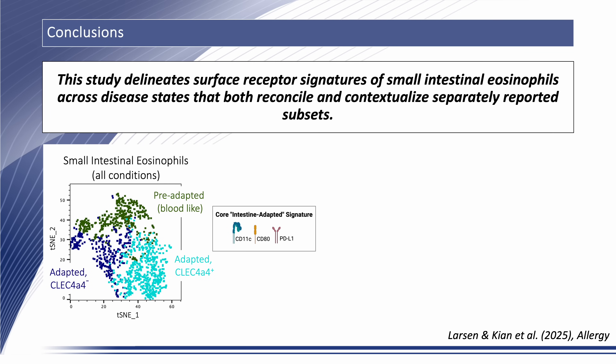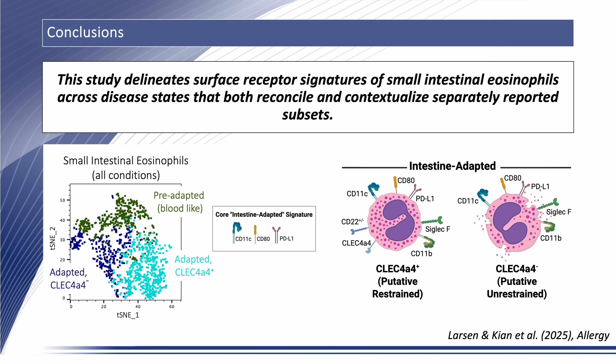In summary, we provide a comprehensive rendering of small intestinal eosinophil phenotypes that reconciles recently and separately reported intestinal eosinophil subpopulations, and reveal rapid effects of the local tissue microenvironment in shaping intestinal adaptations in vivo. Further functional studies are pending to evaluate the potential restraining function of CLEC4A4 in the context of disease and inflammation. This study has important implications for eosinophil-associated intestinal diseases, including opening the door to more nuanced histopathologic assessments of eosinophil subsets to guide therapy, and consideration of novel therapeutic interventions that seek to modulate eosinophil phenotypes. Thank you!